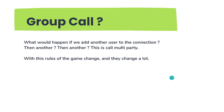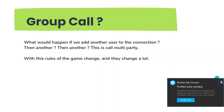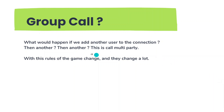What happens in a group call? Let's say we have a room — you can imagine it like a physical room. If one user comes into that room, then we add another, and in this manner we keep adding users. That room then becomes a multi-party call.